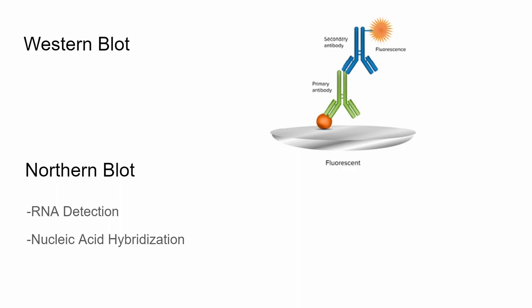On the other hand, northern blot is where we try to find RNA in a sample. Northern blot uses nucleic acid hybridization to detect RNA sequences. Southern blotting aims to detect DNA sequences, and like northern blotting, uses the hybridization of nucleic acids.